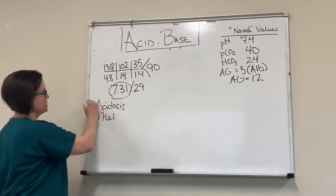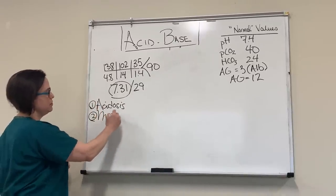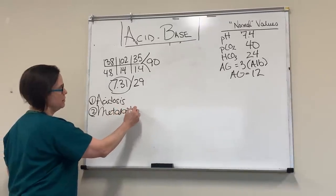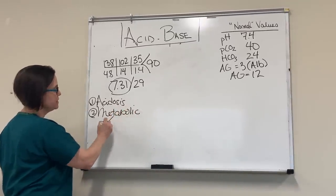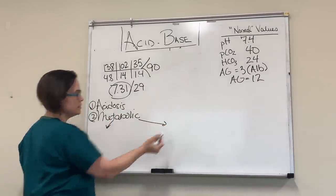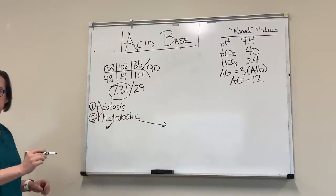Step one is acidosis. Step two is metabolic acidosis. Then we divide into two things — you can do either first: figure out our anion gap, and figure out our compensation.